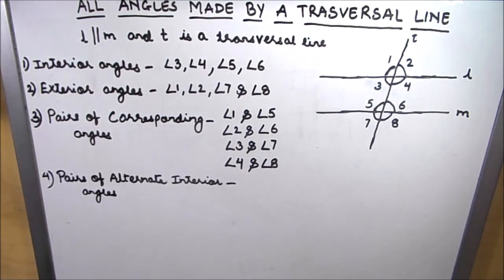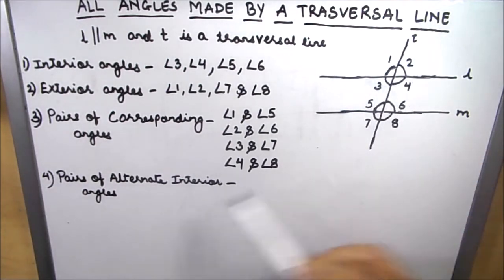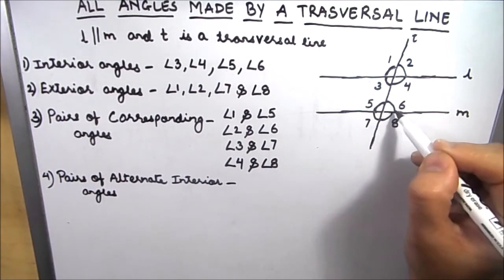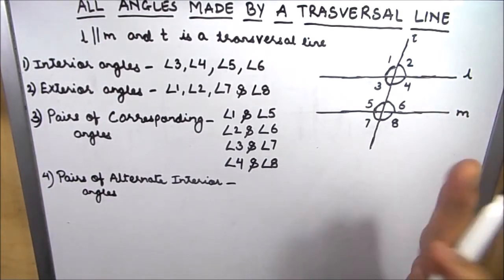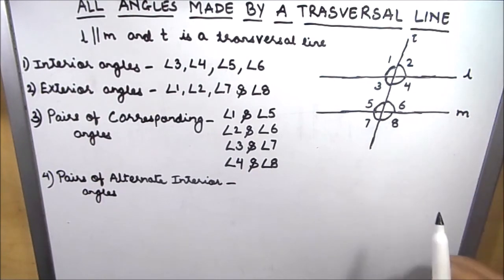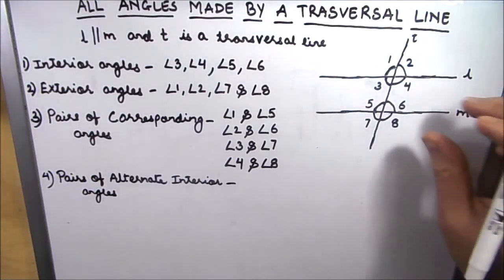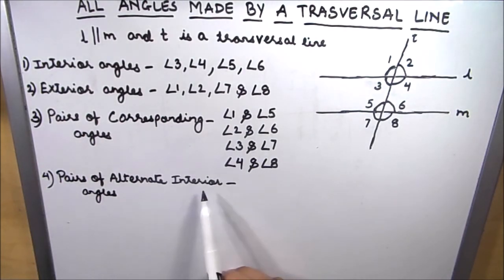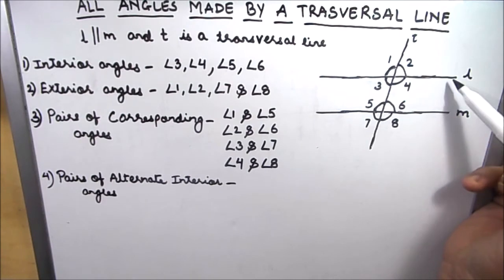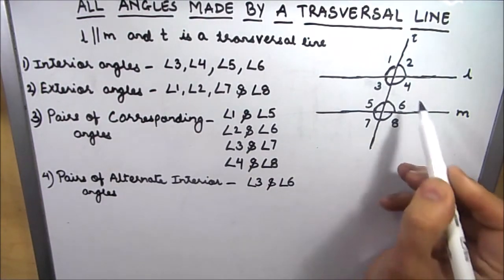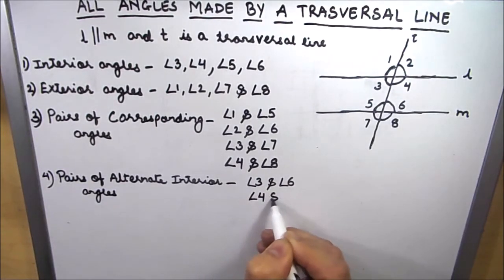Next comes the pair of alternate interior angles. As the name suggests, they are interior angles that are on the alternate side of the transversal. Angle 3 and angle 6 are on different sides of the transversal and inside the two parallel lines, making them alternate interior angles. There are two pairs: angle 3 and angle 6, and angle 4 and angle 5.